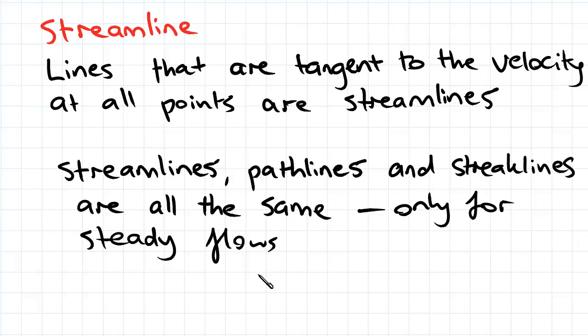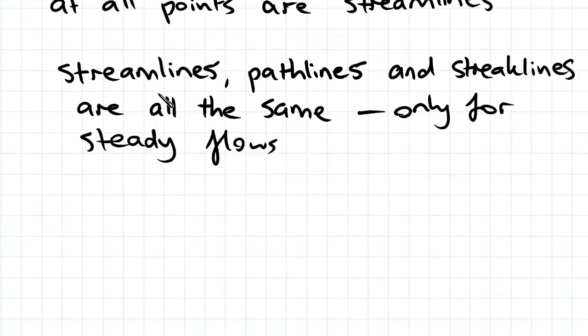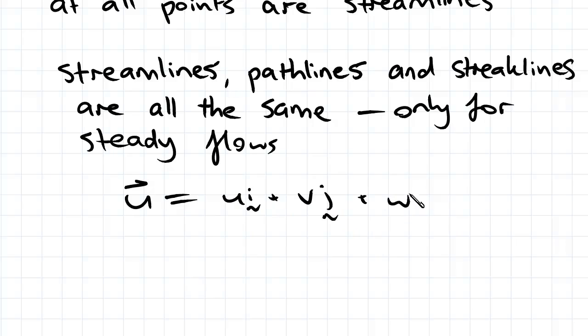Now, by definition, the streamline is the tangent to the velocity u. So if we have a velocity field equal to ui plus vj plus wk, the streamline is the tangent at all points, and we can find the equation of the streamline by finding the gradient of the velocity.